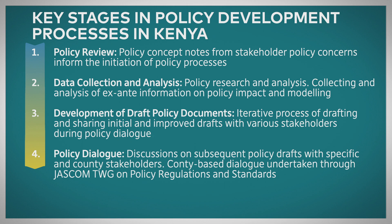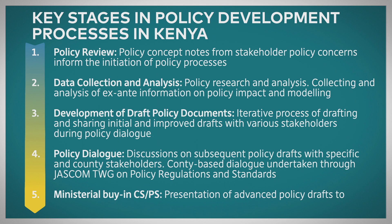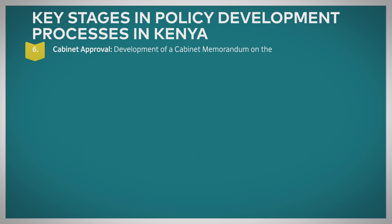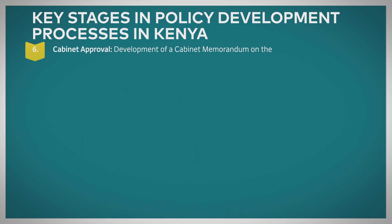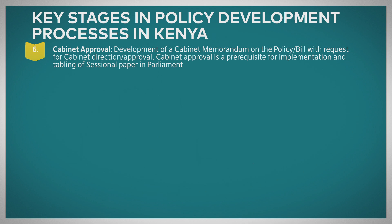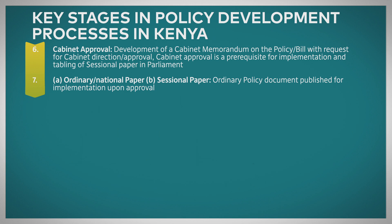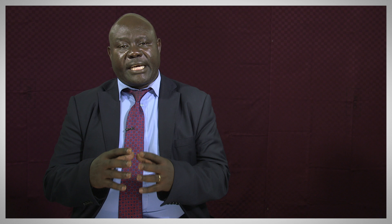After the stakeholder process, the highest institution in that particular ministry — if it is the Ministry of Agriculture, it could be the cabinet secretary and the principal secretary — then it is presented to them for them to own it. After they own it and find it is okay, then they present it to the cabinet. Cabinet memos are prepared and it is given to the cabinet for approval. Once the cabinet approves it, it can take two steps depending on what kind of policy it is. If it is a policy that can be implemented within the existing frameworks, then they prepare what we call a sessional paper, which is taken straight to parliament for discussion and then it is enacted.